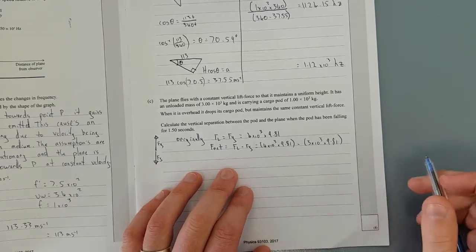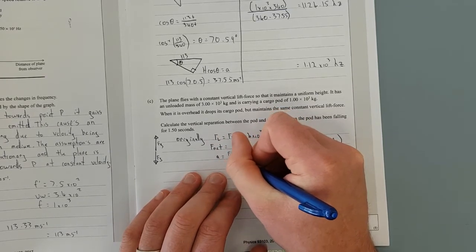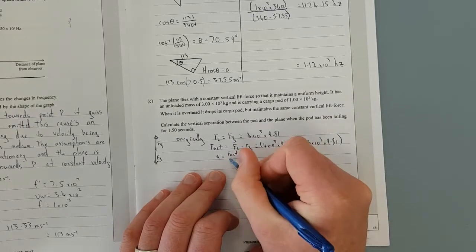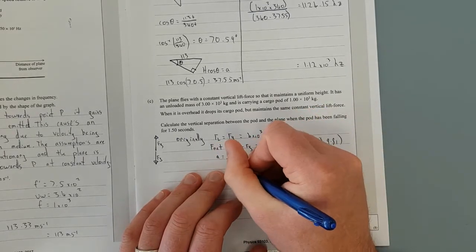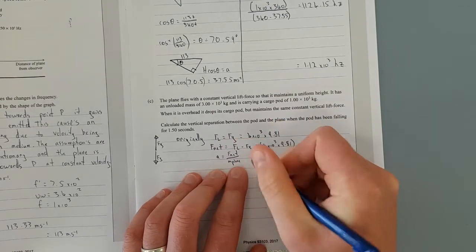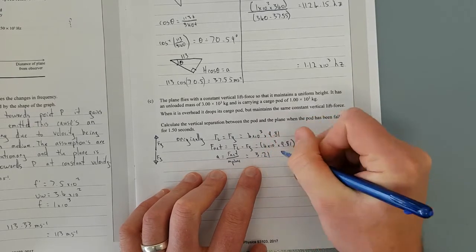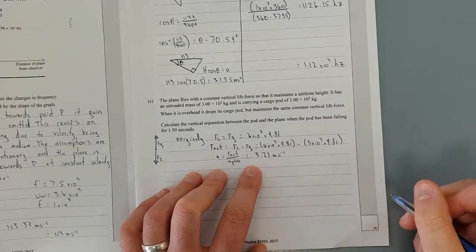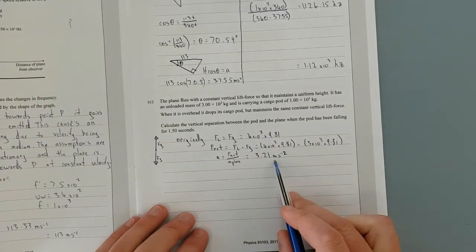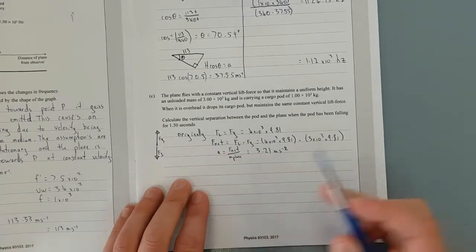But we'll just leave it there. So now we know we can figure out acceleration is just force over mass. So force net of this here divided by the new mass of the plane and that will give us the net acceleration which is equal to 3.21 meters per second squared. So now we have it is accelerating upwards at 3.21 meters per second.